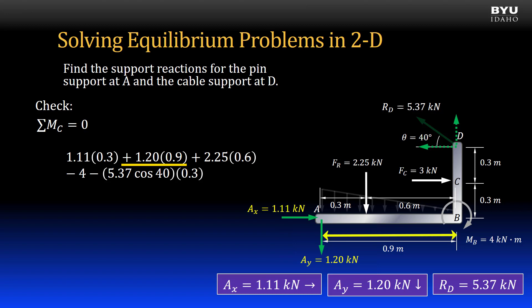plus 2.25 kN times 0.6 m, minus the concentrated moment, 4 kN·m, minus the horizontal component of RD times its moment arm, 0.3 m.